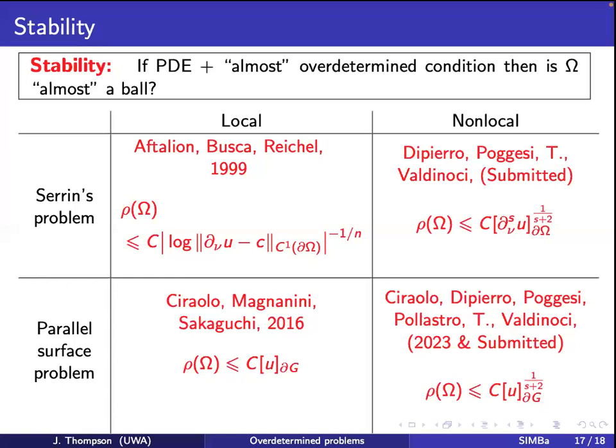For the parallel surface problem, the result was again obtained by Ciraolo, Magnanini, and Sakaguchi. Notably, the exponent is one — no log term. This is believable because the parallel surface is in the interior of the domain, and if the function is harmonic it's smooth. If you consider perturbations of a ball and take the perturbation to zero, both quantities go to zero at the same rate.